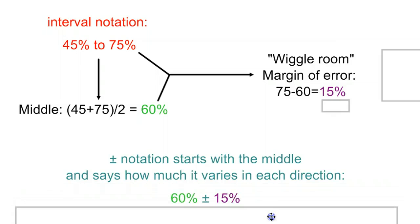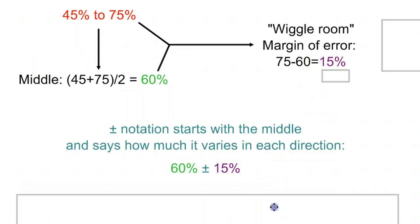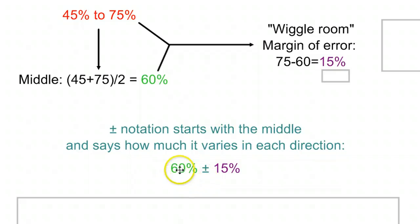We start with the middle. Say how much we vary in each direction. 60% plus or minus 15%. And if you do the math of the plus and the minus as two separate problems, 60 plus 15 is 75, 60 minus 15 is 45. That's how you know you have the right interval.